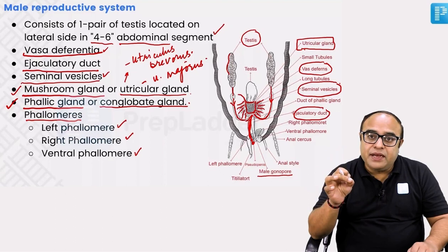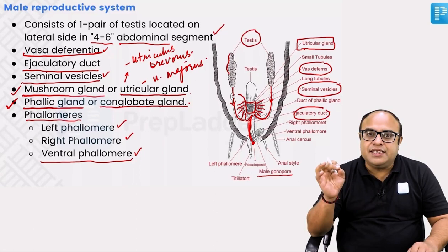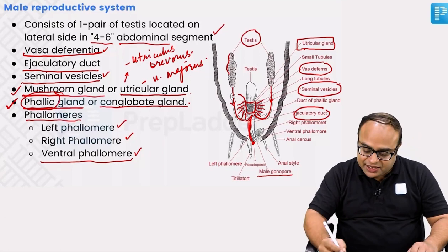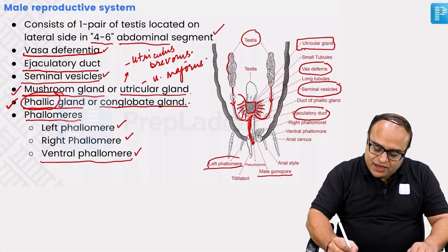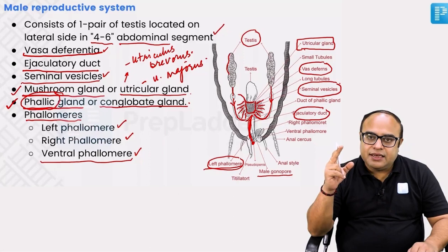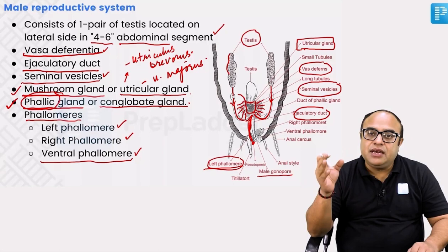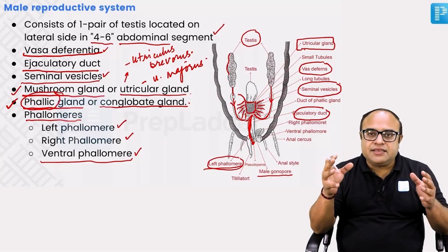The male gonopore opens into the ventral phallomere. If asked specifically which phallomere the male gonopore opens into, the answer is the ventral phallomere. The phallic aperture opens into the left phallomere. The phallic gland has a phallic duct which opens outside the body of the cockroach into the left phallomere, while the ventral phallomere contains the male gonopore.